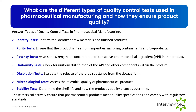What are the different types of quality control tests used in pharmaceutical manufacturing and how do they ensure product quality? Types of quality control tests include: identity tests, which confirm the identity of raw materials and finished products; purity tests, which ensure the product is free from impurities including contaminants and byproducts; potency tests, which assess the strength or concentration of the active pharmaceutical ingredient (API); uniformity tests, which check for uniform distribution of the API; dissolution tests, which evaluate the release of the drug substance from the dosage form; microbiological tests, which assess the microbial quality; and stability tests, which determine the shelf life and how product quality changes over time. These tests collectively ensure that pharmaceutical products meet quality specifications and comply with regulatory standards.